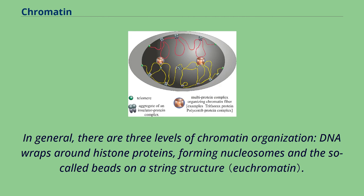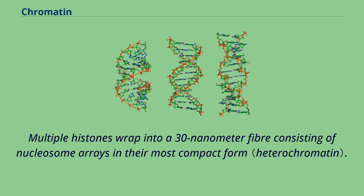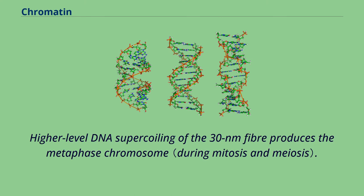In general, there are three levels of chromatin organization. DNA wraps around histone proteins, forming nucleosomes and the so-called beads on a string structure. Multiple histones wrap into a 30 nanometer fiber consisting of nucleosome arrays in their most compact form. Higher-level DNA supercoiling of the 30 nanometer fiber produces the metaphase chromosome.